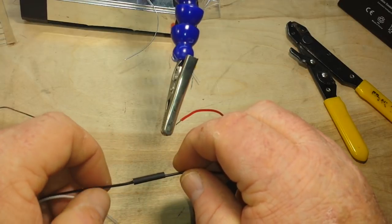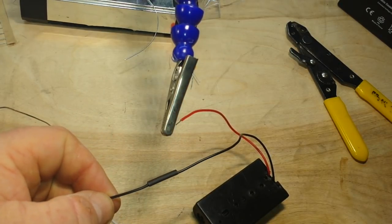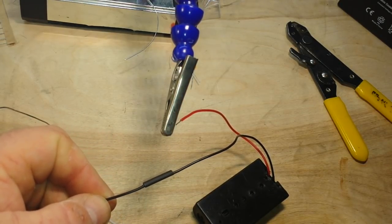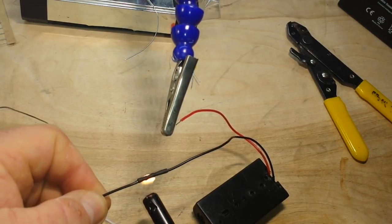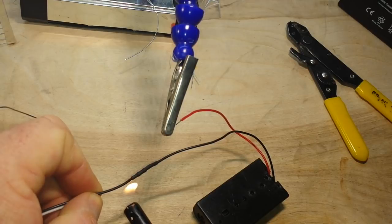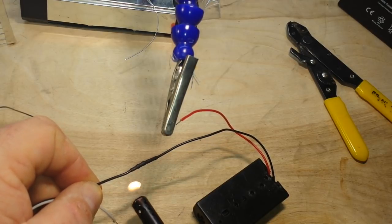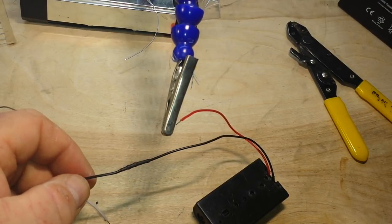Next up, we'll put our heat shrink on. The proper way to do this is with the heat gun. I don't have one. So a lighter will do just fine.